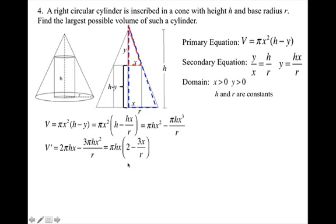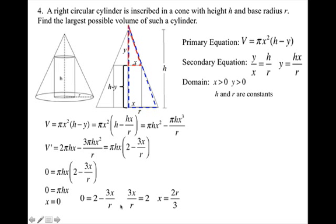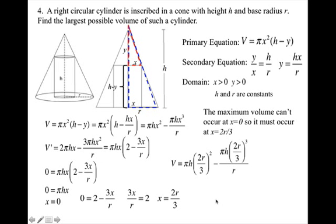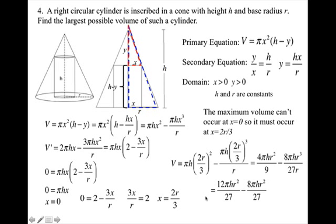I simplify by pulling out pi hx, then set equal to 0. Each factor equals 0: pi hx equals 0 gives x equals 0, and the remaining factor gives x equals 2 thirds times r, or 2r over 3. The maximum volume can't occur at x equals 0 since x must be greater than 0, so the maximum occurs at x equals 2r over 3. Plugging 2r over 3 into the volume equation and simplifying by finding a common denominator gives a maximum volume of 4 pi h r squared over 27.